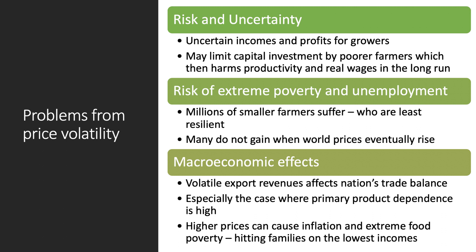Price volatility creates serious economic and social problems. It makes incomes and profits for growers uncertain — if you don't know what your income will be, it is harder to secure loans to fund investment. Millions of smaller farmers with low productivity are exposed to world price swings and often lack the resilience to cope. Even when prices go up, they don't necessarily gain. At a macro level, volatile prices mean export revenues — captured in C+I+G+X−M — can be unpredictable, affecting a nation's balance of trade, particularly in countries like Ghana and Ivory Coast with high primary product dependence. High prices can also cause inflation and food poverty, especially for families on the lowest incomes with limited social safety nets.